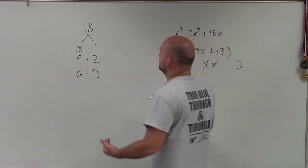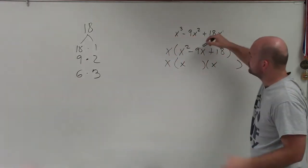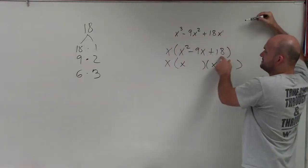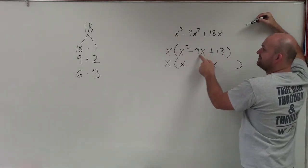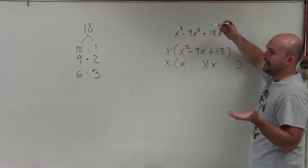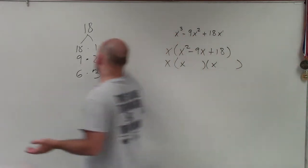So again, what we look at, the next thing we want to do is look at our middle term. Because remember, when we multiply to give us 18, we're also going to multiply the inner and the outer to add, and they're going to add to give us negative 9. Well, if these two numbers are going to add to give us negative, that means they have to both be negative.